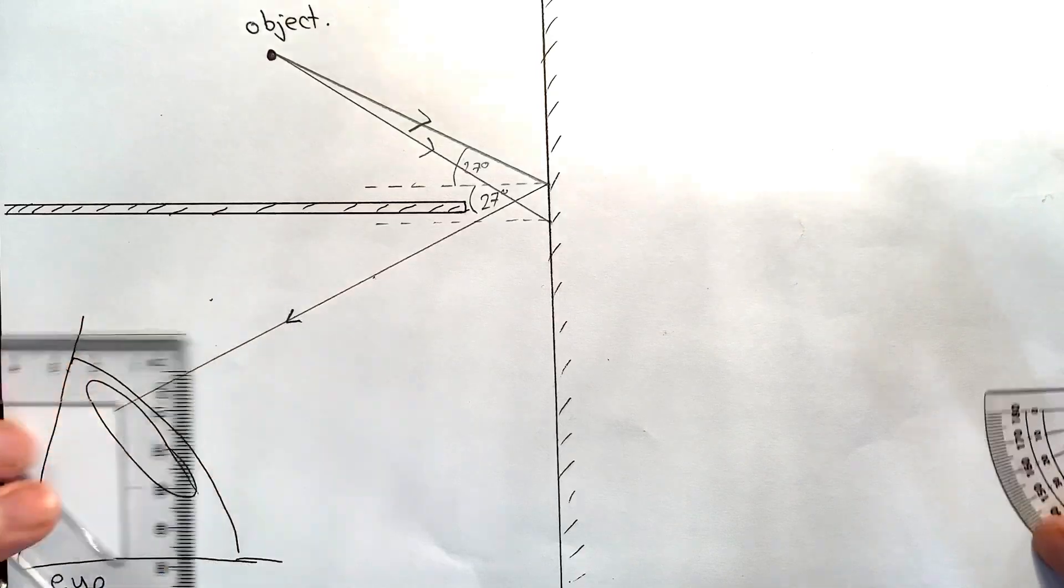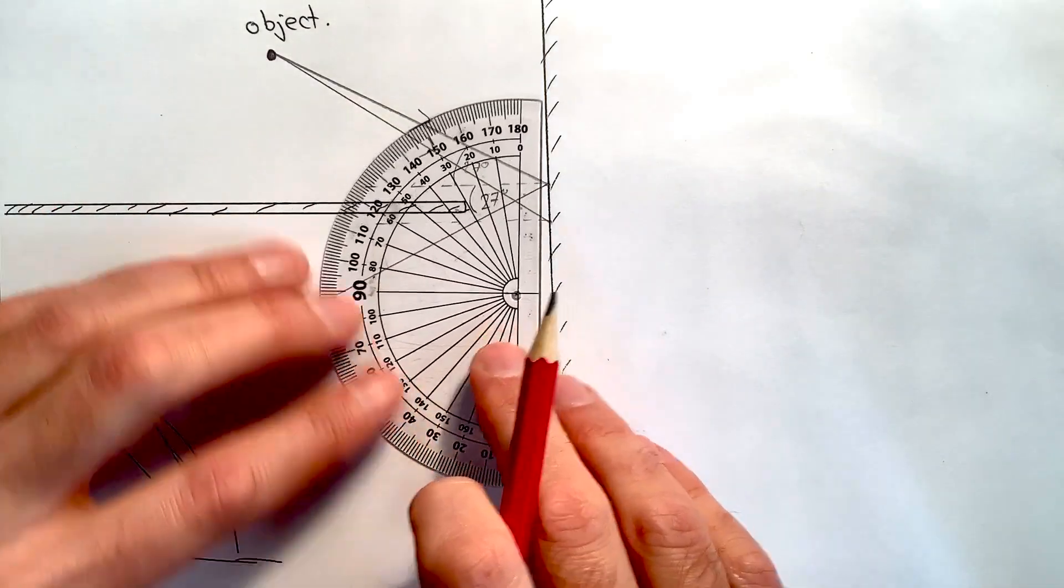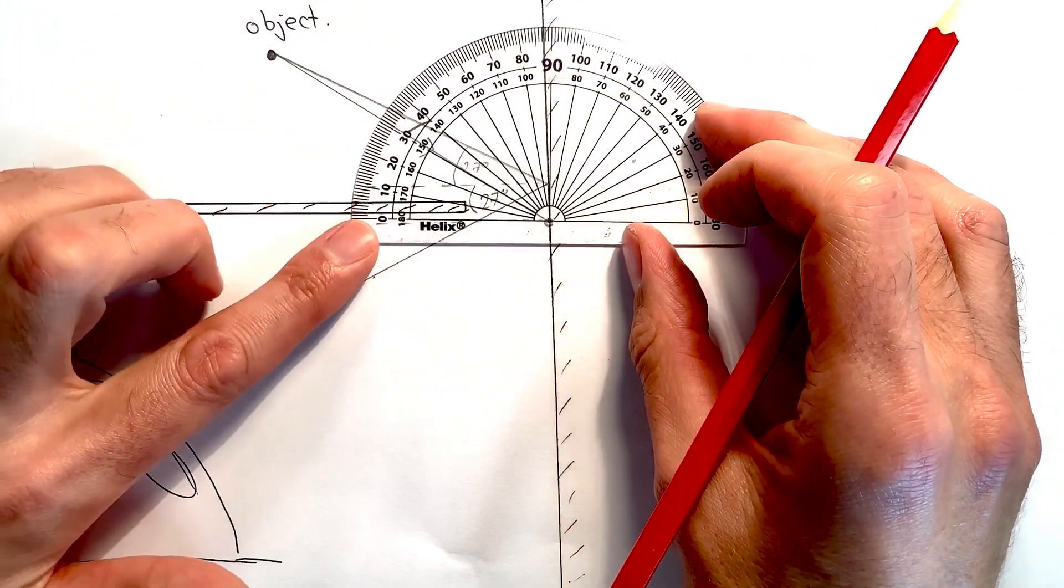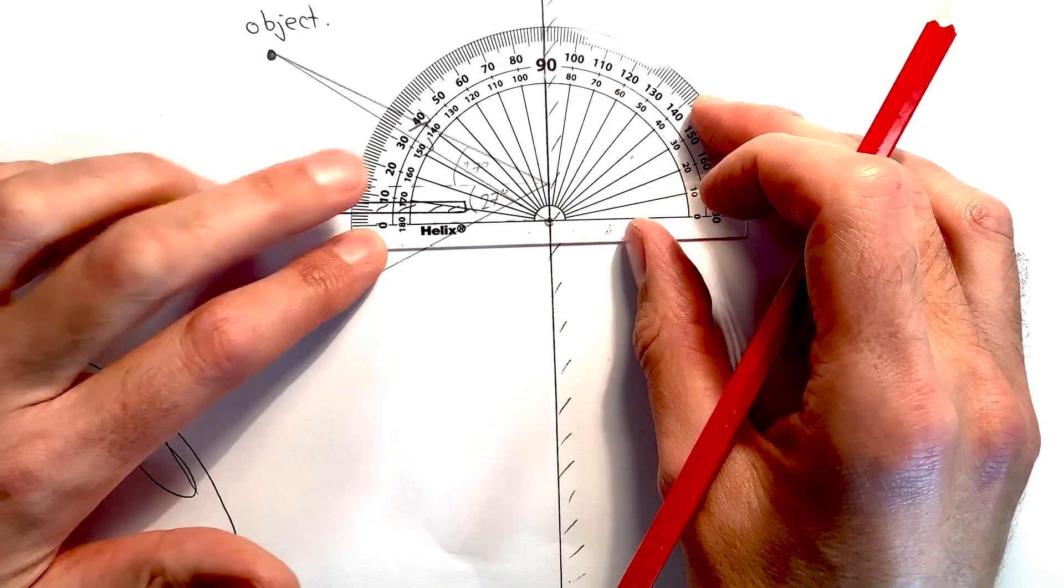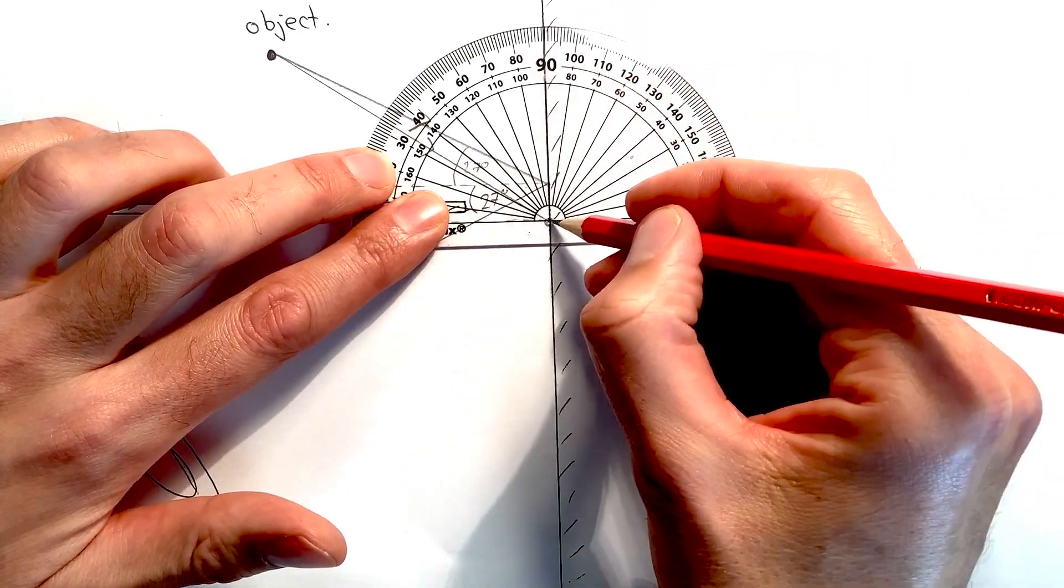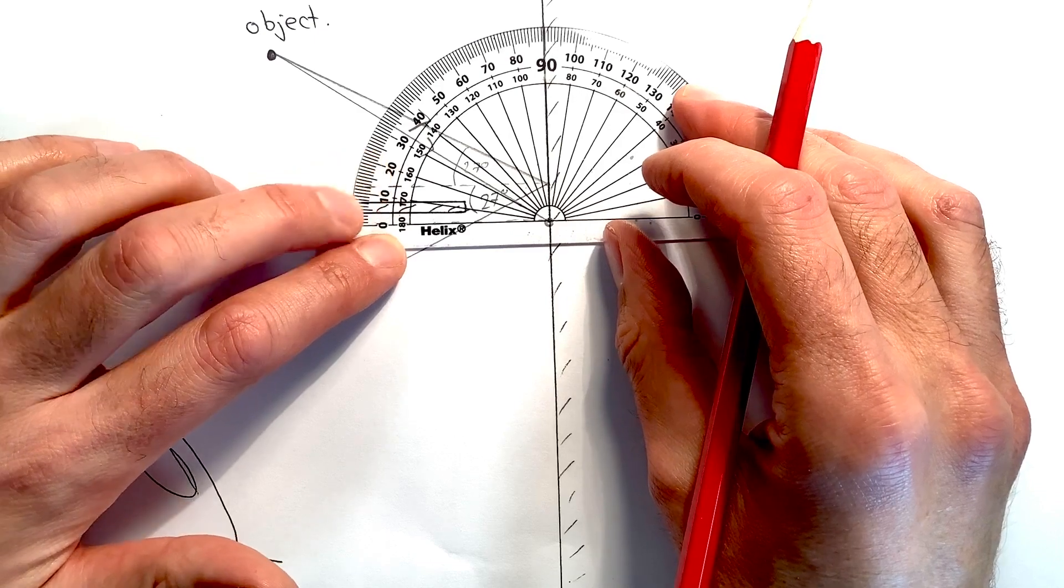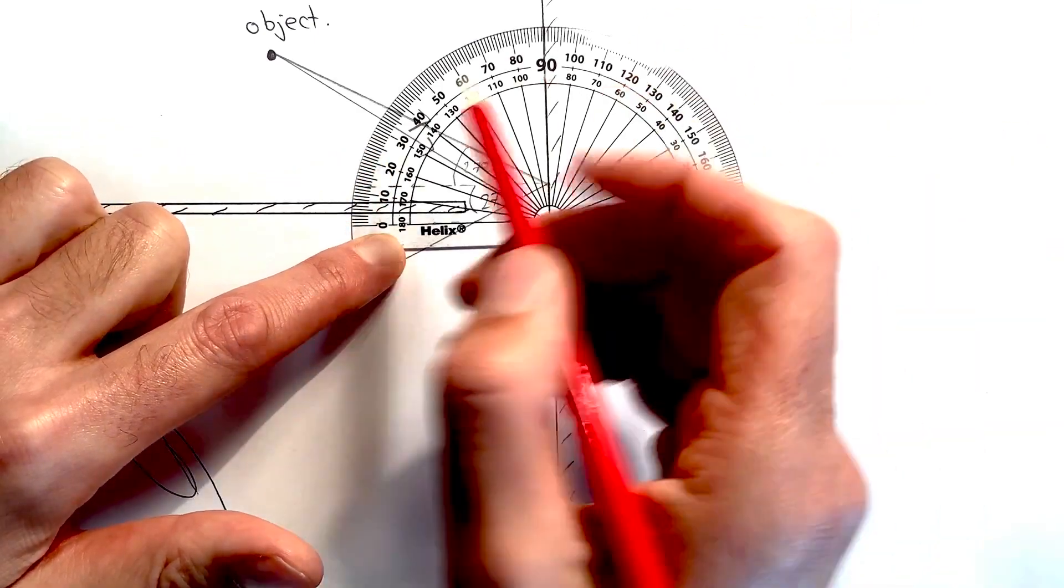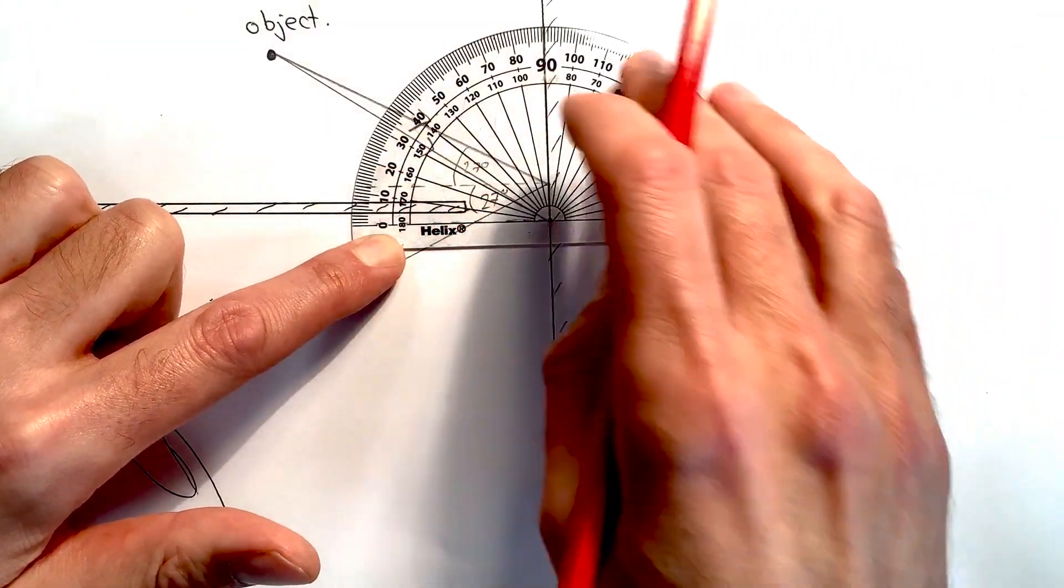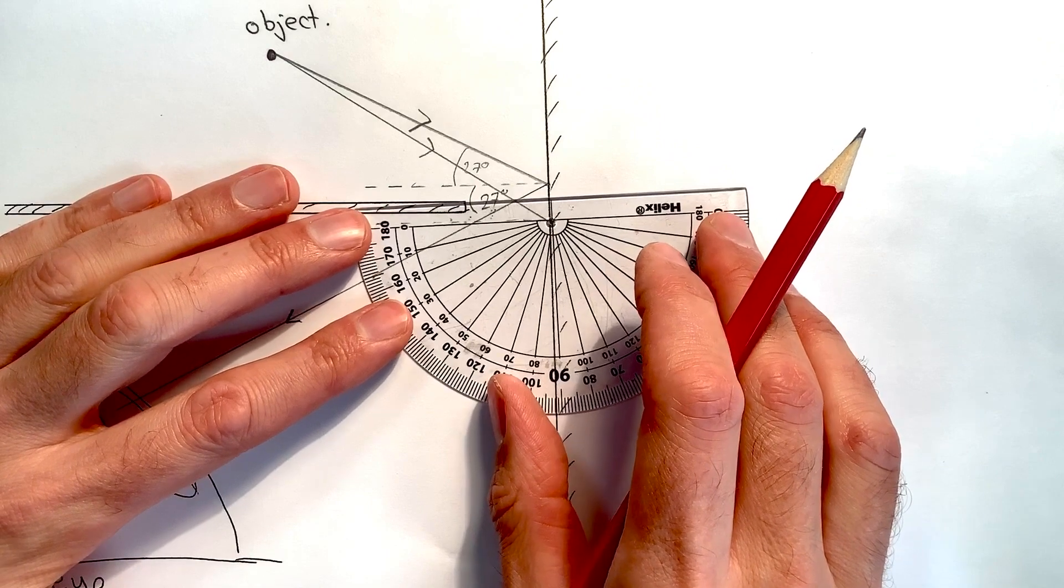Then I can use my protractor to measure my new angle of incidence. For this one, again I can line up the 90 degrees with the mirror to make sure, even if I've not drawn my normal perfectly, that that is good. And I can see that that is 33 degrees.